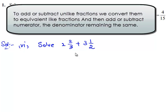Here we need to add two mixed fractions. So to add two mixed fractions, first we need to convert these mixed fractions into their improper form. Therefore first let us convert 2 2/3 into its improper form.